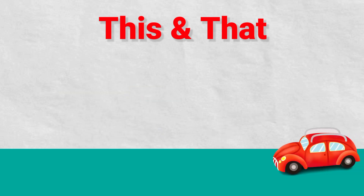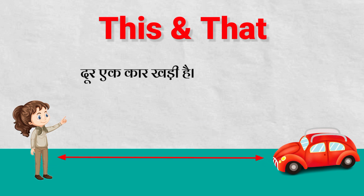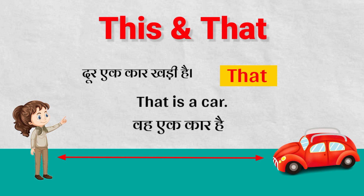Now there is a car that is standing far away from me. Ek dur kaar khadi hai. So what will I write? I will use 'that' and I will make the sentence: 'That is a car.' Vaha ek car hai.